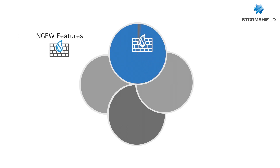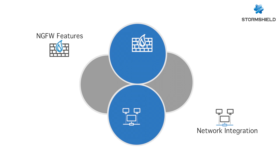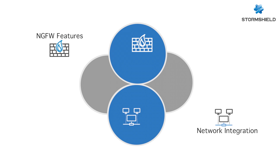StormShield Next Generation Firewall offers a wide range of security and control features, independent of deployment modes. It can be deployed inline, transparent, in a routed environment, or in a mixed hybrid environment. The flexibility makes it easy to create safe and secure zones, and simple to deploy into complex architectures without modifying anything in the network.